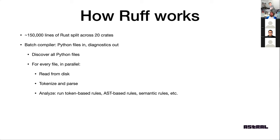Then we analyze that tokenized and parsed representation. We support lots of different kinds of lint rules, and the inputs they take can be different. For example, some lint rules only need to look at comments — if you want to make sure a Python script has a shebang, you only need to look at comments, not the AST. So we have some rules based on the token stream, and then a bunch of rules based on traversing and understanding the syntax tree and doing semantic analysis. Semantic analysis would be for things like unused imports — to understand whether an import is unused, you have to traverse the AST, identify the imports, and keep track of them as you traverse the rest of the AST.